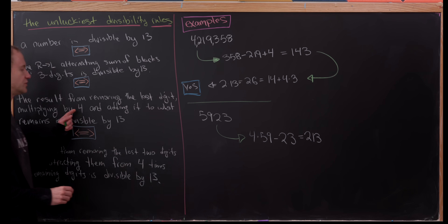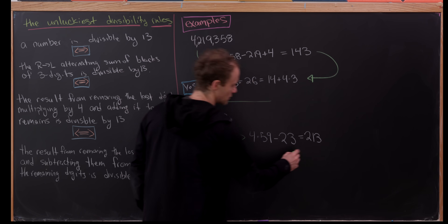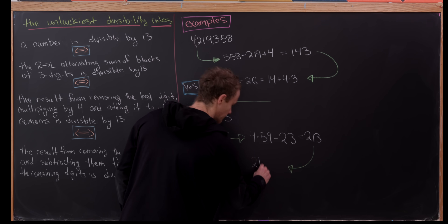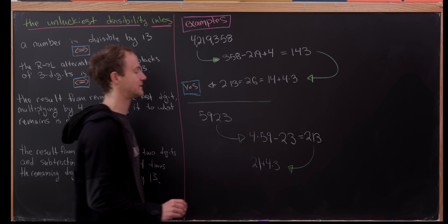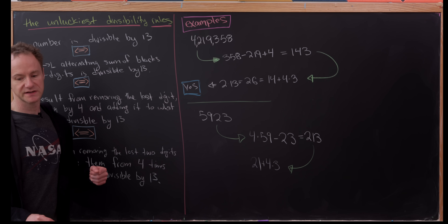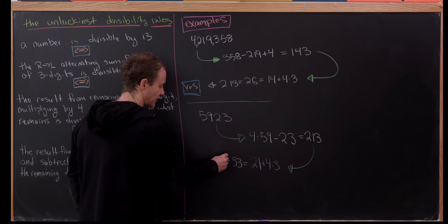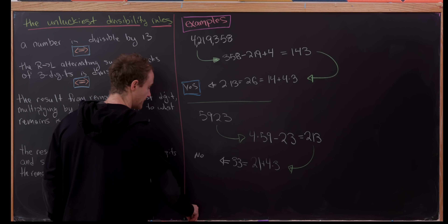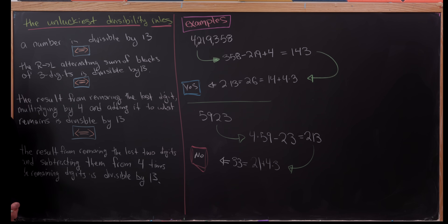Now let's use the second rule on 213 for practice. We remove the last digit, multiply it by four, and add it to what remains. So we have 21 plus four times 3. That's 21 plus 12, which is 33. And 33 is not a multiple of 13, so the answer is no — our original number is not a multiple of 13.